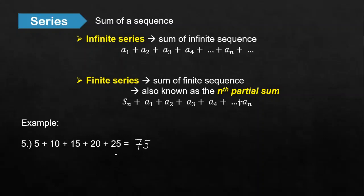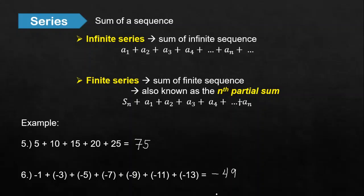Again, we add them. And for the other example, we have -1 plus -3 plus -5 plus -7 plus -9 plus -11 plus -13, which gives us -49. By the way, if we compare example 5, it is only a partial sum of the previous infinite sequence, because we can't determine the exact sum of an infinite series.